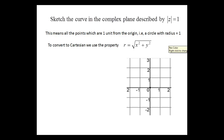Let's sketch the curve in the complex plane described by the modulus of Z equals one. This means all of the points which are one unit from the origin — that means a circle with radius one. Every point on that circle is one unit away from the origin.